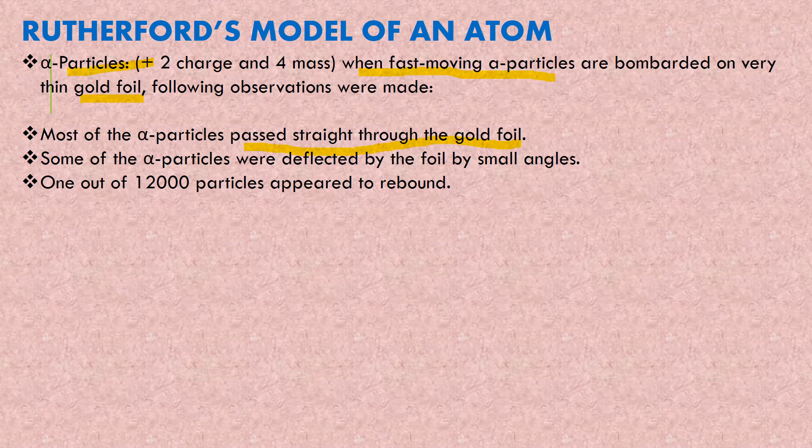Most of the alpha particles passed straight through the gold foil. That means they passed straight away. I'll show the diagram. Some of the alpha particles were deflected by the foil by small angles. So very small angles, they just got deflected. That means they changed the direction.